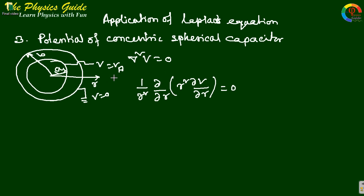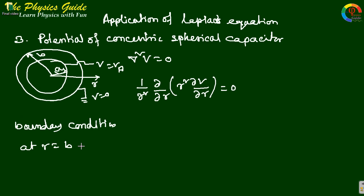We solve this using the boundary conditions. The boundary conditions are: at r = b, V = 0 (the outer sphere is grounded), and at r = a, V = Va (the inner sphere is held at potential Va).